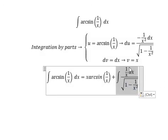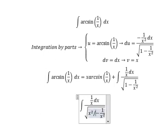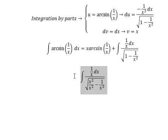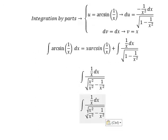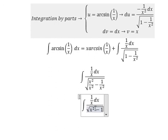Now I will focus on this integral. We can multiply by x squared over x squared to rewrite this as the square root of x squared minus 1 over x. The x terms simplify.